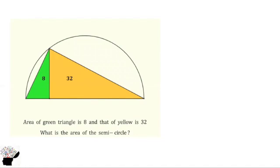Let us consider the solution. We all know that the area of a triangle is half the base times the height. So for the green triangle, we can represent the base by X and the height by H. And also for the yellow triangle, we can represent the base by Y.